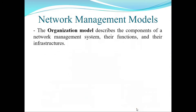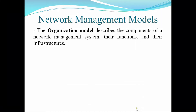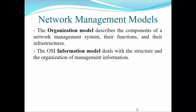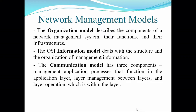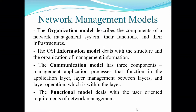The Organization Model describes the components of a network management system, their function, and their infrastructure. The OSI Information Model deals with the structure and organization of management information. The Communication Model has 3 components: management application process that functions in the application layer, layer management between layers, and layer operation which is within the layer. The Functional Model deals with the user-oriented requirements of network management. These are the 4 models.